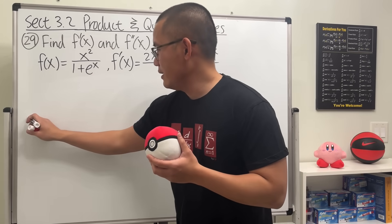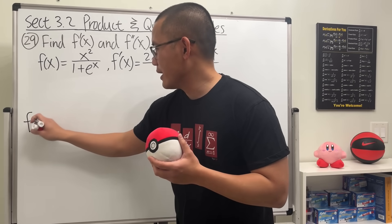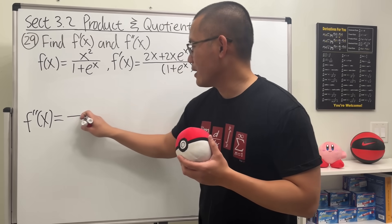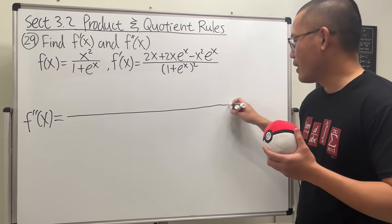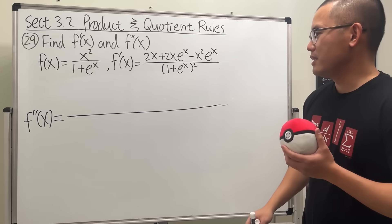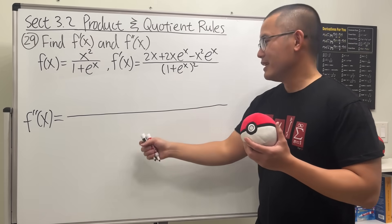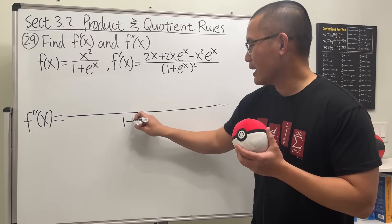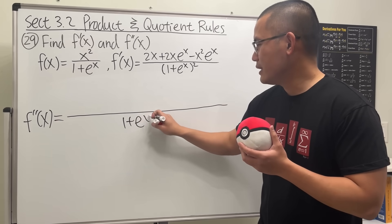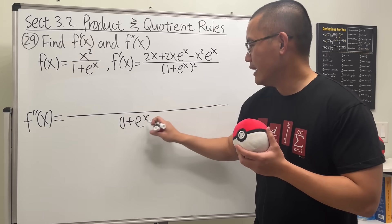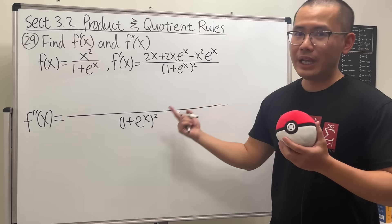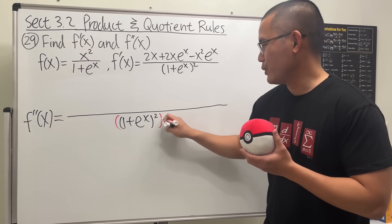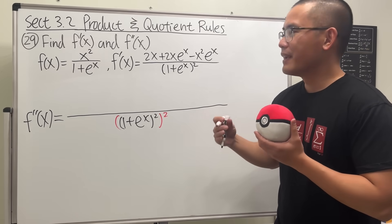I already have the first derivative right here, so let's go ahead and put down f double prime with a big fraction bar. Let's do the easy part first — square the bottom, so we have (1 + eˣ)², and we have to square this thanks to the quotient rule.